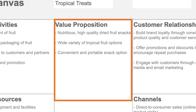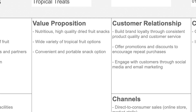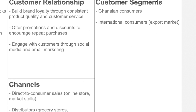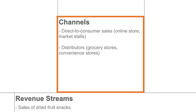The value proposition of Tropical Treats is that they provide nutritious high-quality dried fruit snacks, and a key selling factor is that they have a wide variety of tropical fruit options packaged in a very convenient and portable form. Their customer segments are Ghanaian consumers and also international consumers because they export their products.